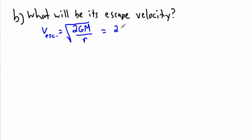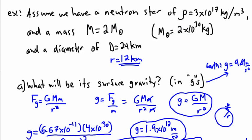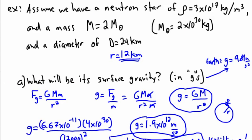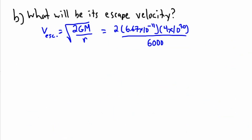We'll just start putting in the numbers. So 2 times 6.67×10^-11, times its mass, which is 4×10^30 kg. We'll divide all of that by 12,000. Now we're going to take the square root of all that.